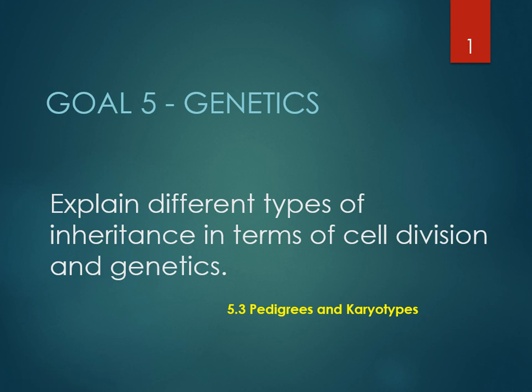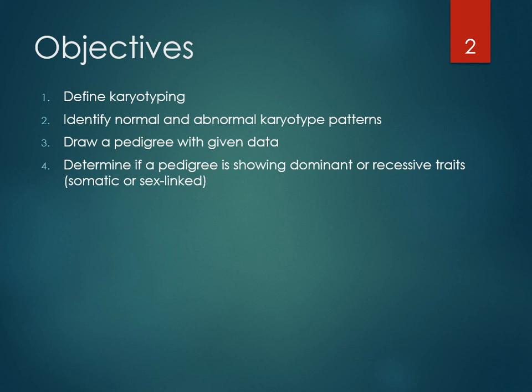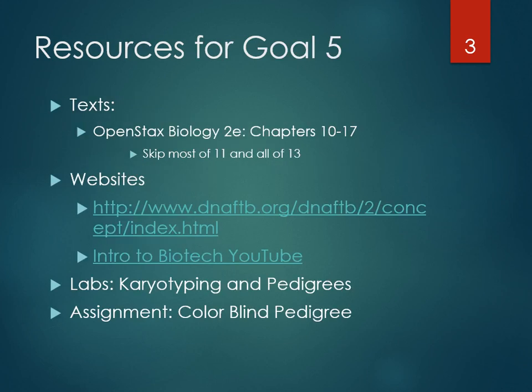This is module 5.3, Pedigrees and Karyotypes. We're going to look at what a karyotype is and do one, identify what's abnormal about karyotypes, and learn about how to do pedigrees and then do some. This is in chapters 10 through 17 in your textbook. You can skip most of 11 and all of 13. It's a brief part of this genetics section.